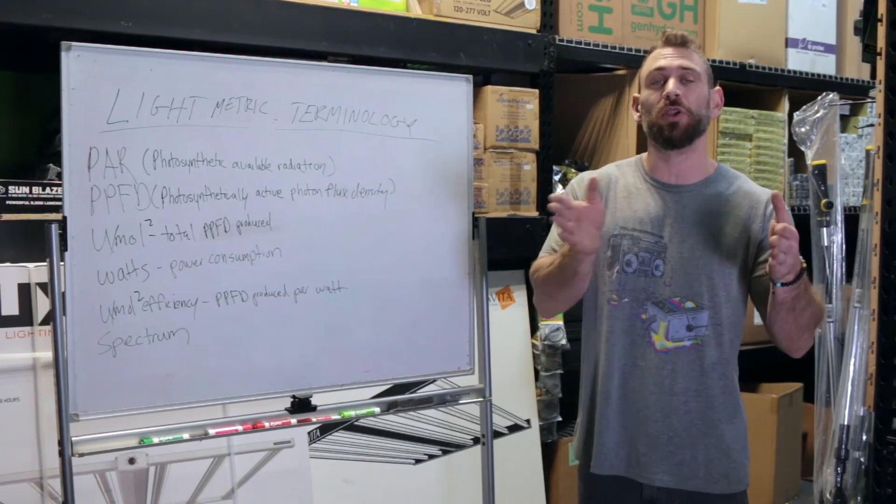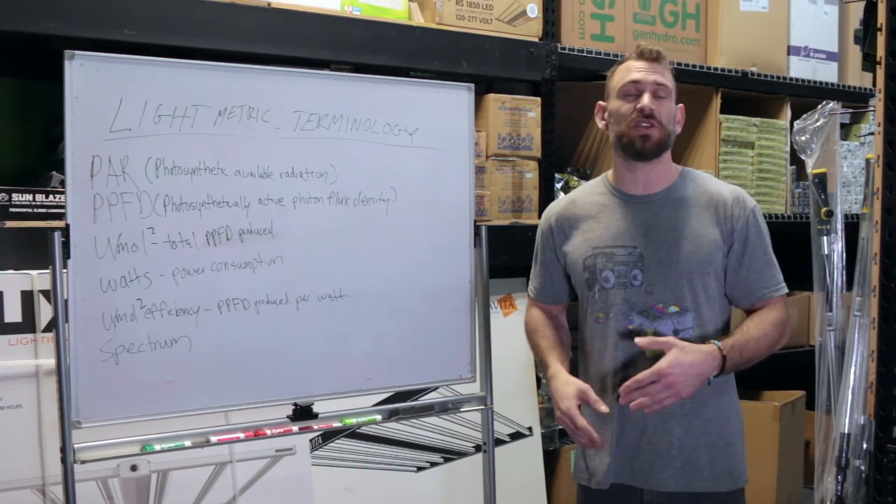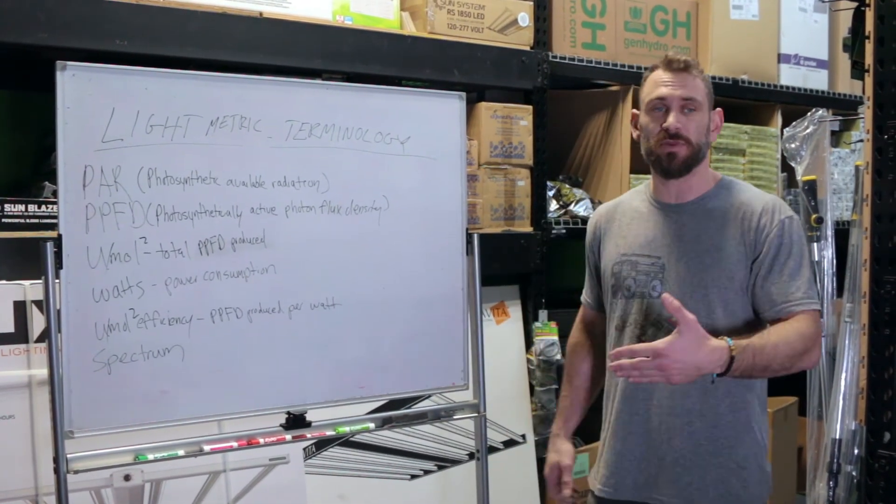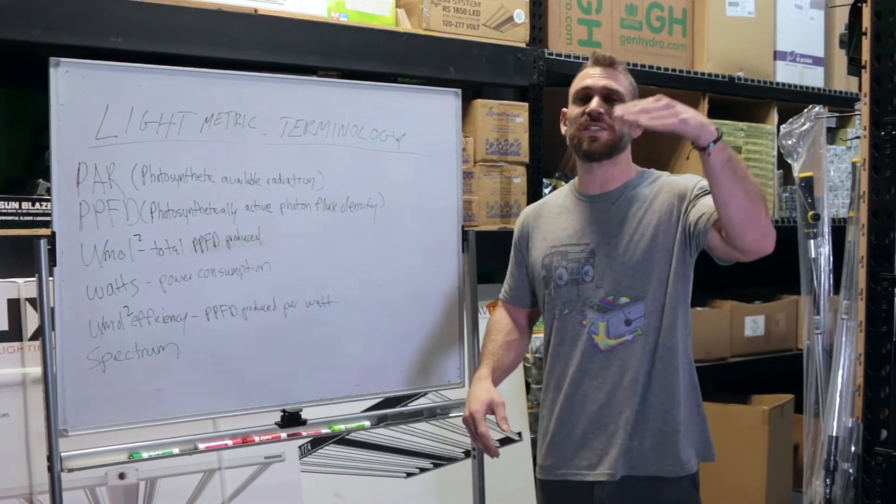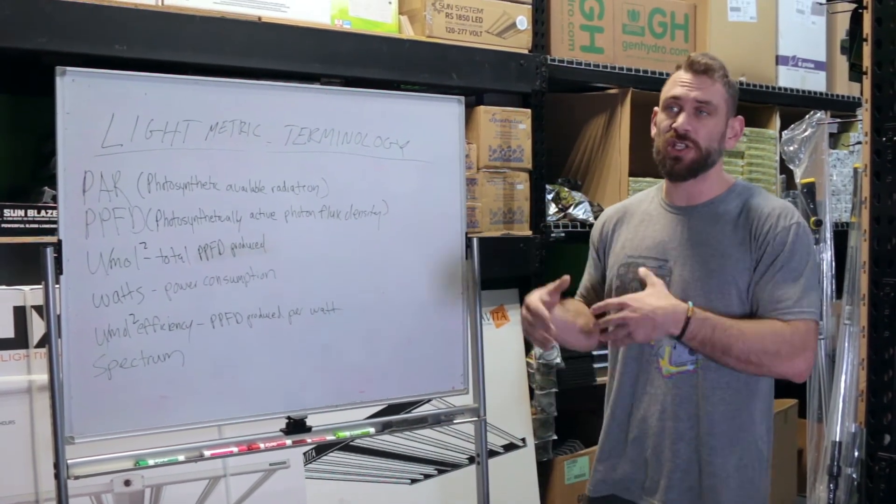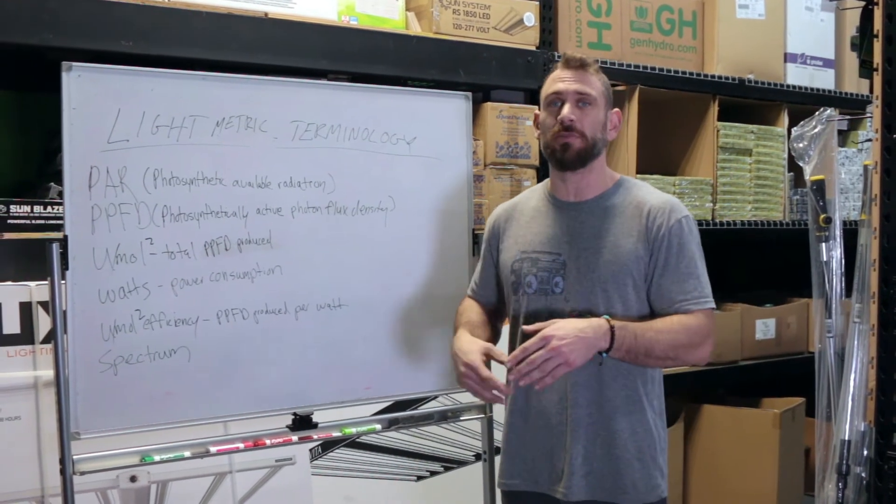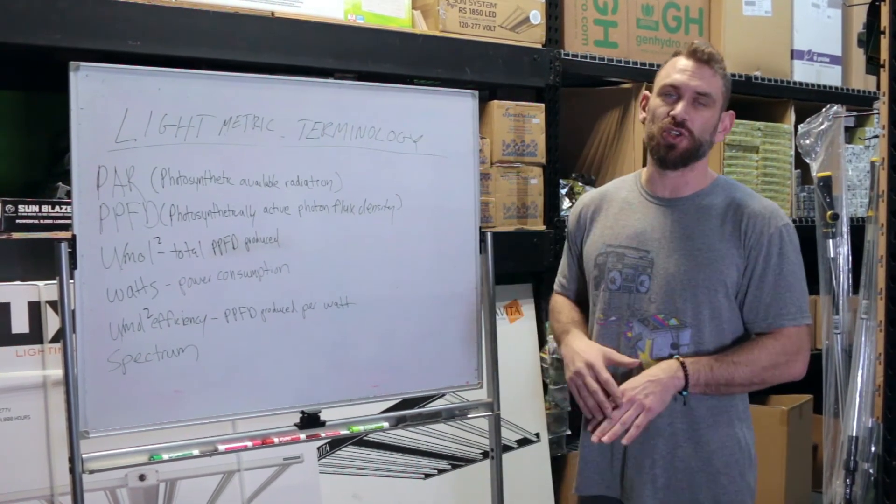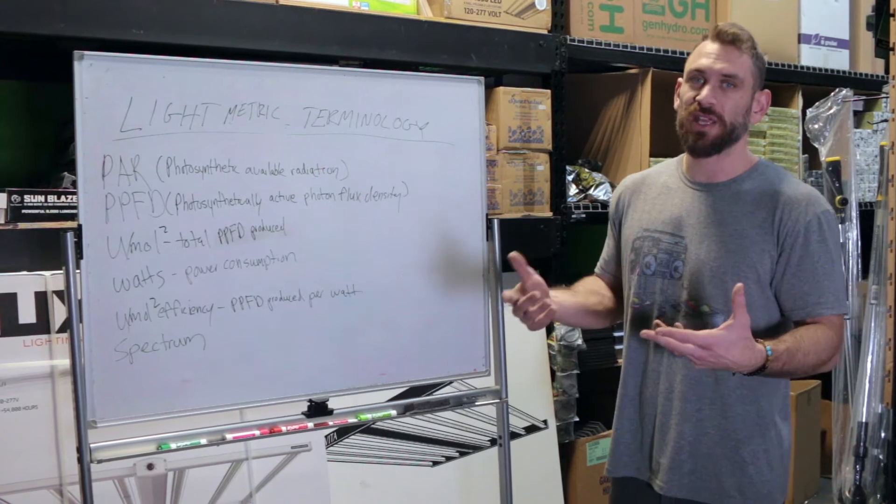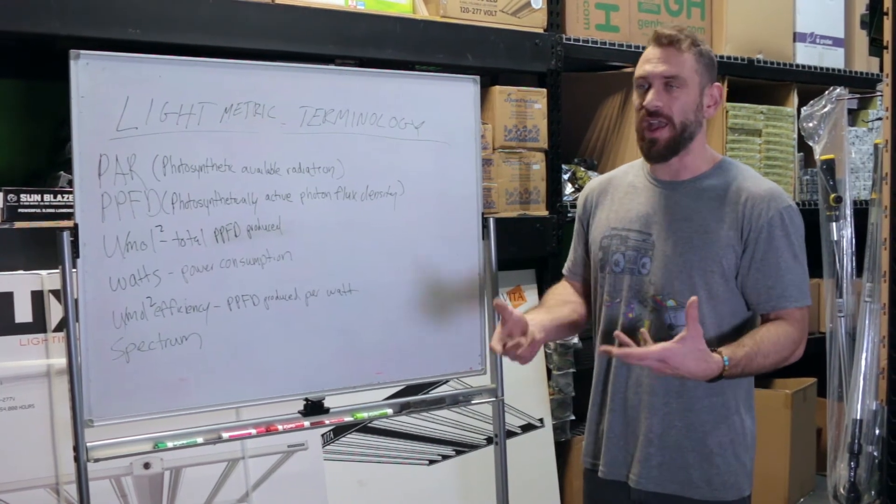In vegetative growth, we want a more blue-centric spectrum. This is going to be a higher Kelvin. Spectrum is measured by Kelvin. So 4,000 to 6,000 Kelvin is going to be your blue range, and then your red range for flowering is going to be in your lower between 2,800 and 3,600 Kelvin. So that'll just read as a K after the number.